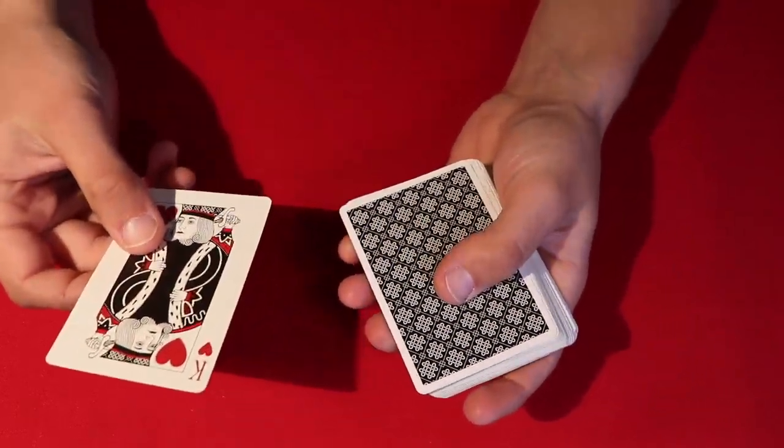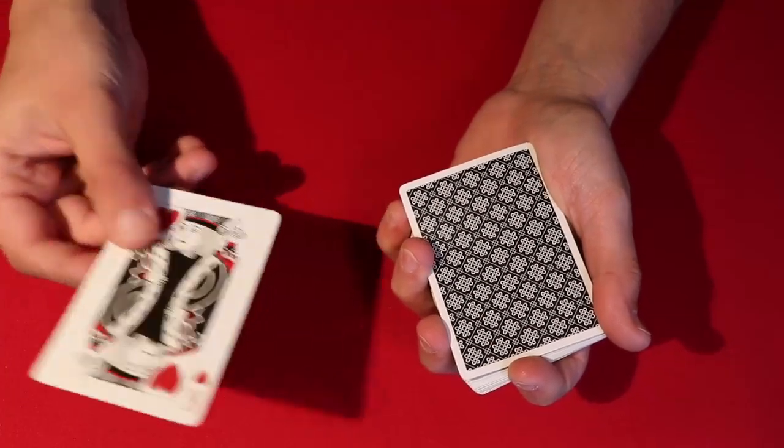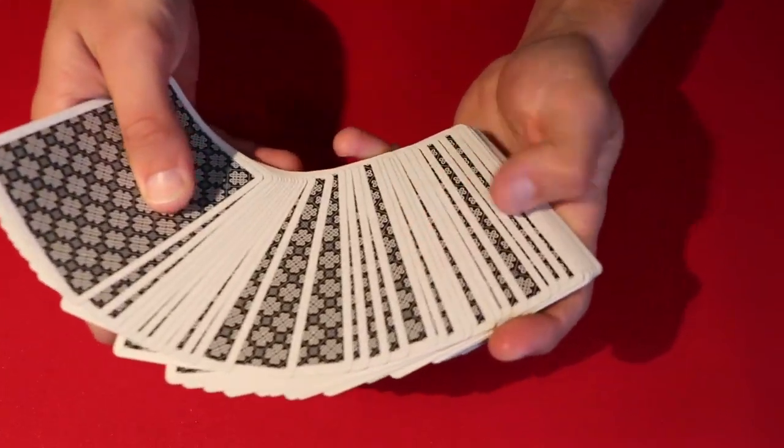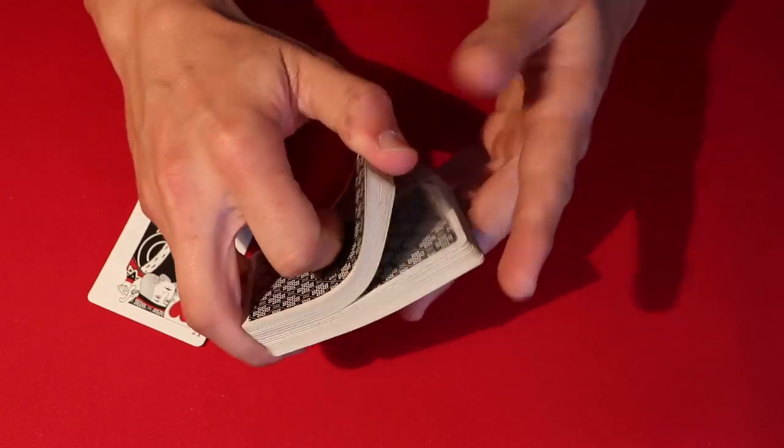Until they eventually have to find each other again. So that's the whole story. You take their card, you take the soulmate. And then what you do is you can tell your spectators, alright, so go ahead and shuffle up this deck a little more.